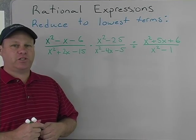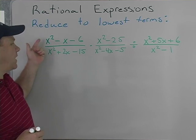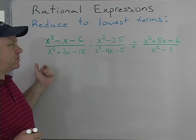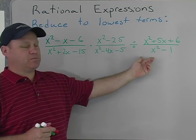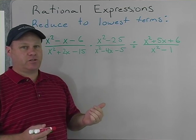Okay, here we have another rational expression, and we're going to reduce it to lowest terms. We're going to do that by factoring the numerators and denominators, rewriting division as multiplication of the reciprocal, and then factoring out common terms.